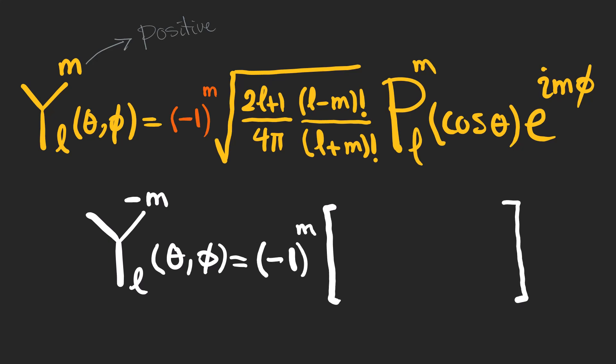They can be written like this, meaning that for negative M's, the phase factor is 1, and a conjugate suggests a negative in the exponential. Pay attention that P_L^m is equal to P_L^(-m).